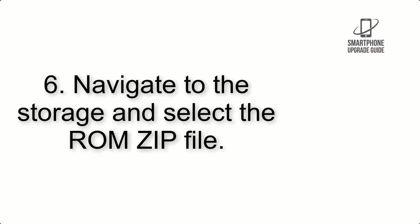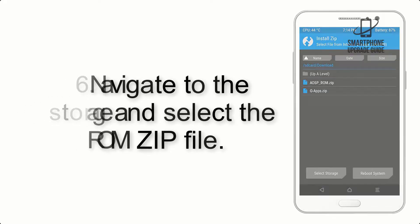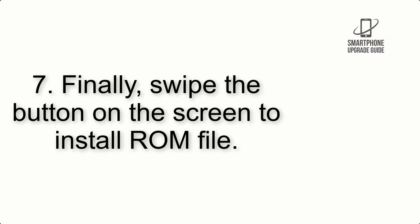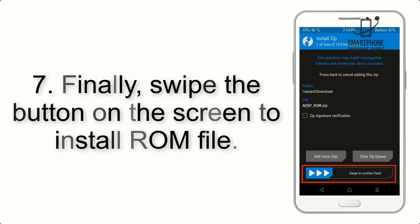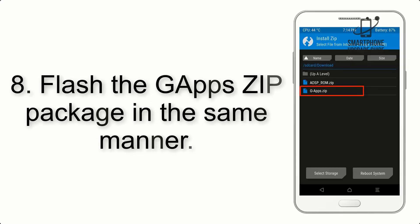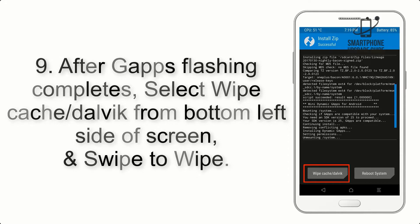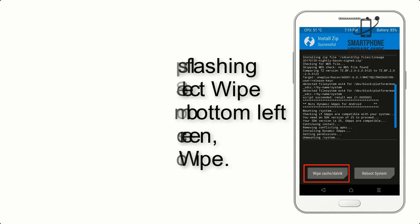Step 6: Navigate to the storage and select the ROM zip file. Step 7: Swipe the button on the screen to install the ROM file. Step 8: Flash the gapps zip package in the same manner. Step 9: After gapps flashing completes, select Wipe Cache and Dalvik from the bottom left side of the screen and swipe to wipe.